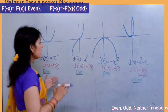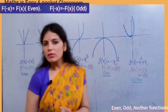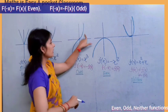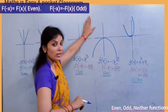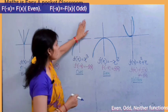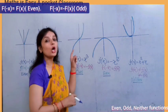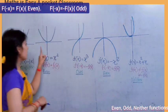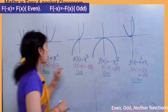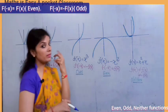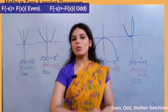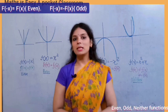Whereas if a function is not symmetrical along the y-axis but it is symmetrical along opposite quadrants — like the first quadrant and the third quadrant — that symmetry across opposite quadrants means it is an odd function. So: symmetrical along the y-axis means even function; symmetric along opposite quadrants means odd function.